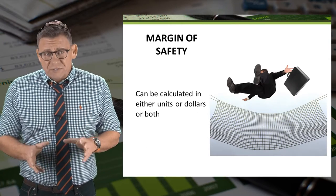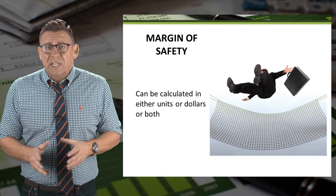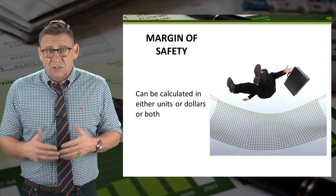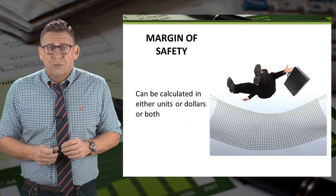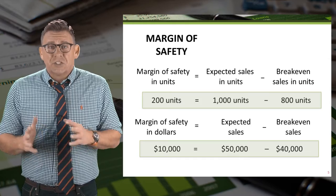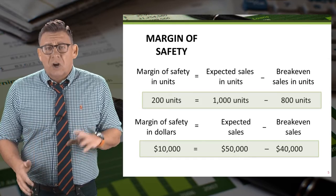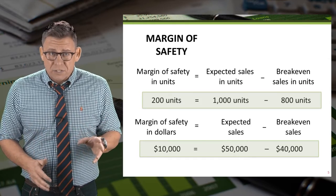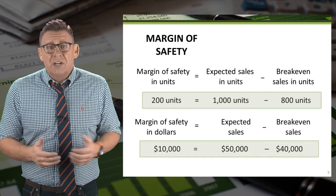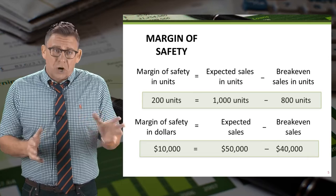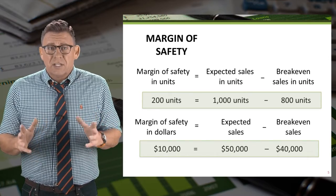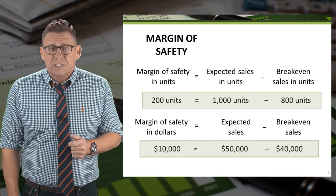Margin of safety can be calculated in either units or sales dollars or both. In this example, expected sales units are 1,000 and break-even units are 800, so the margin of safety in units is 200 units.